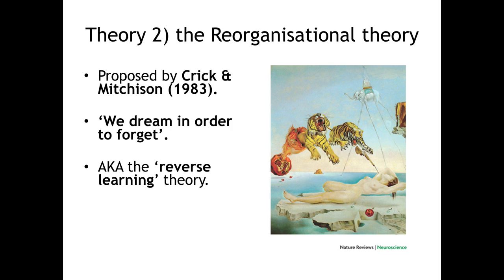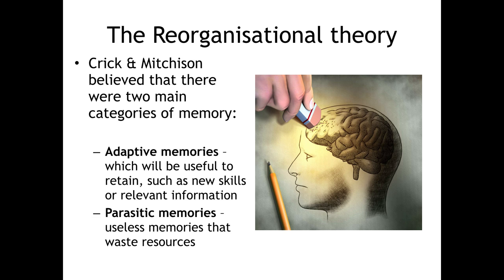Let's look at the thinking behind this. We have to understand that there are two main categories of memory. The main kind are called adaptive memories — think of these as useful memories: skills you've learned, relevant bits of information, things you want to remember like somebody's name or directions to a place of work. But there's also a second kind: parasitic memories. These are useless memories, things gumming up inside your mind that you don't really need. Things like, for example, what colour was the bus driver's uniform this morning? You don't really need to remember that — it's wasting energy, time and resources.